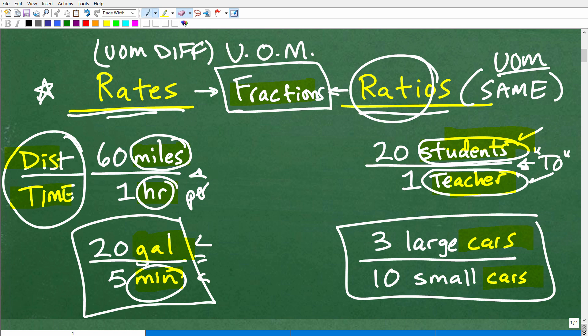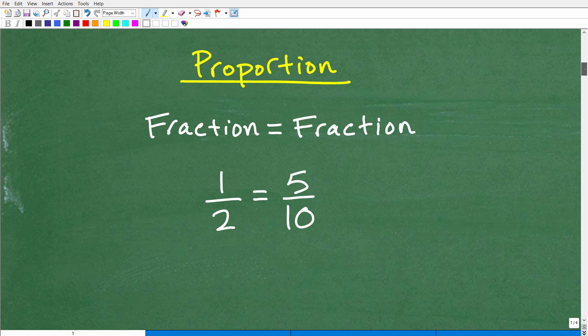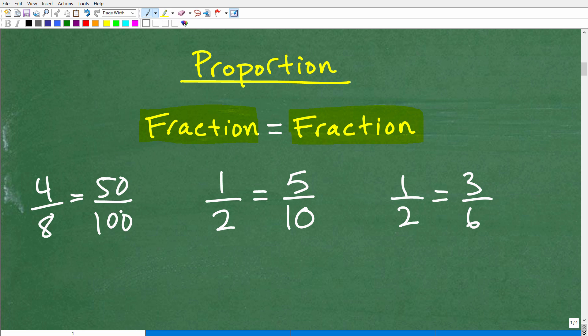Now let's move on to proportions. What is a proportion? It's very easy. A proportion is simply one fraction that's equal to another fraction. So here I have one-half equal to five-tenths. One-half could be equal to all sorts of fractions like three-sixths or four-eighths equals fifty over one hundred. All these would be considered proportions. Anytime you have two equal fractions, you have a proportion.